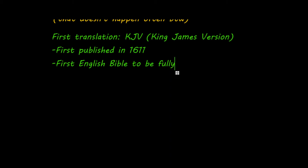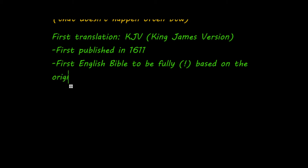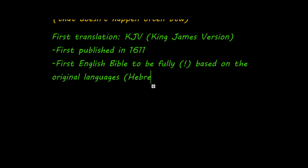There have been partial translations before — translations that were partially based on the original text and partially on the Vulgate or French and German translations. But the KJV was the first one that was fully based on the original Hebrew, Aramaic, and Greek.